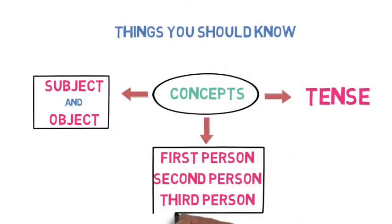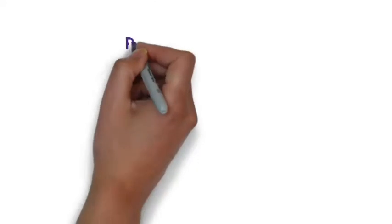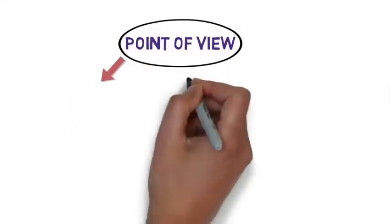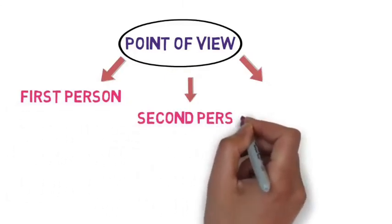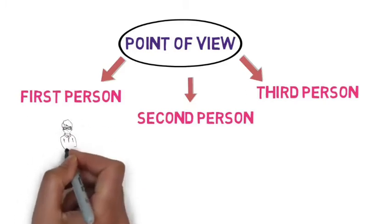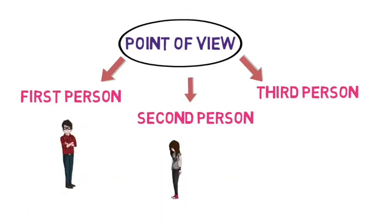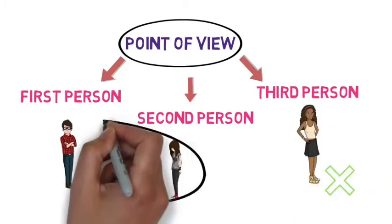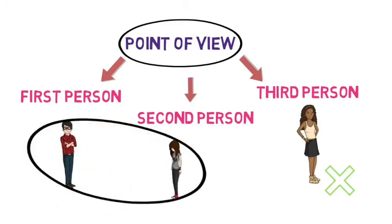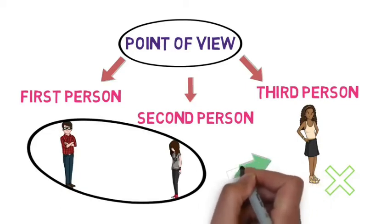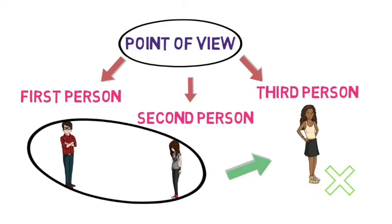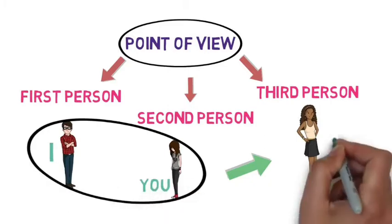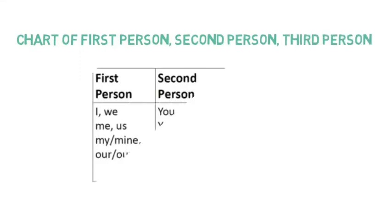Let's understand what is first person, second person, and third person. For that, we need to understand point of view. Basically, there are three points of view in English: first person, second person, and third person. If Ravi and Isha are in a room and Ravi is telling something to Isha about Nikita who is not present, then Ravi is the first person as he is the one speaking, Isha is the second person as she is the one listening, and Nikita is the third person as she is not present. Ravi may be talking like this: 'I am telling you that she is very beautiful.' For the complete chart, please refer to the image.